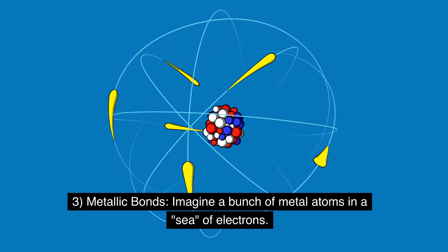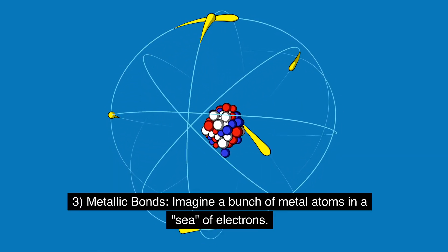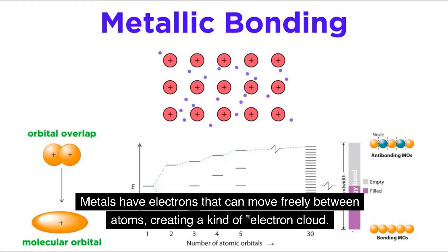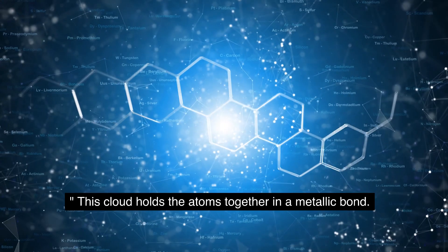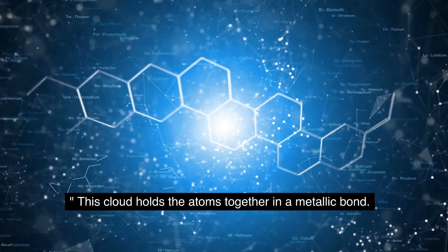Metallic bonds: Imagine a bunch of metal atoms in a sea of electrons. Metals have electrons that can move freely between atoms, creating a kind of electron cloud. This cloud holds the atoms together in a metallic bond.